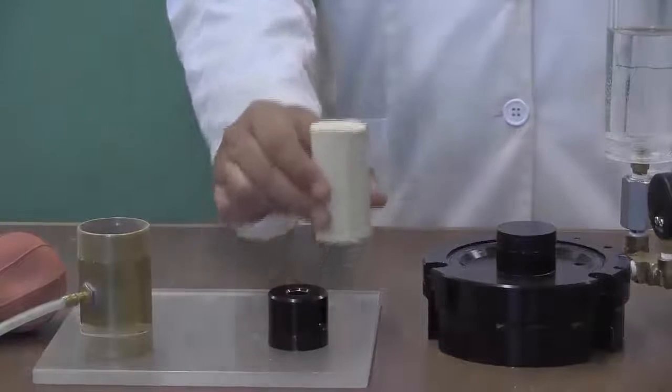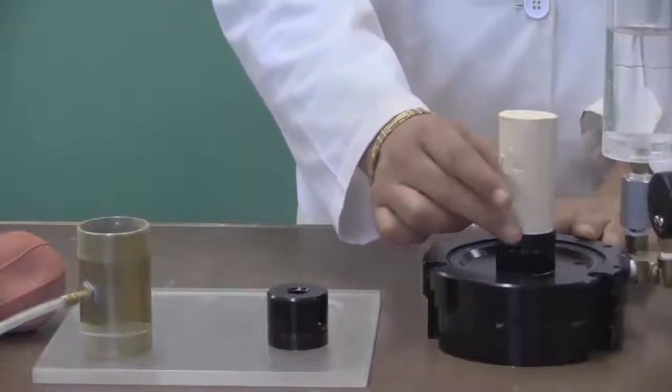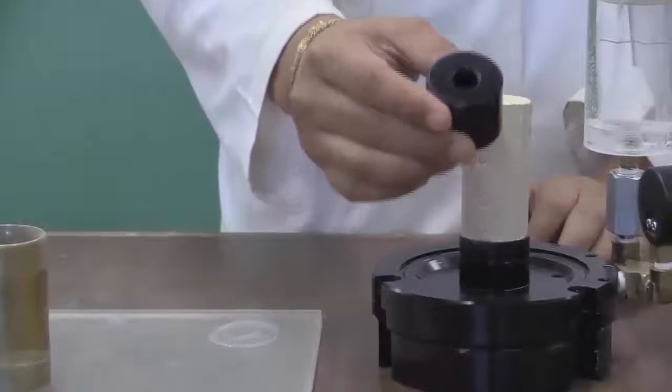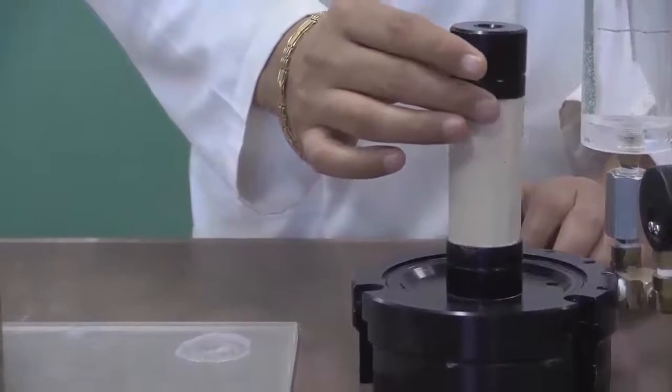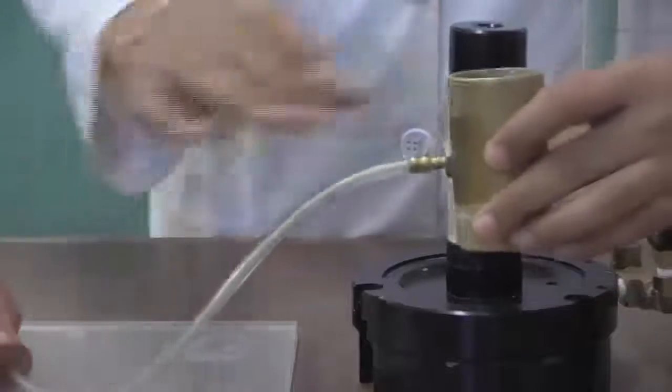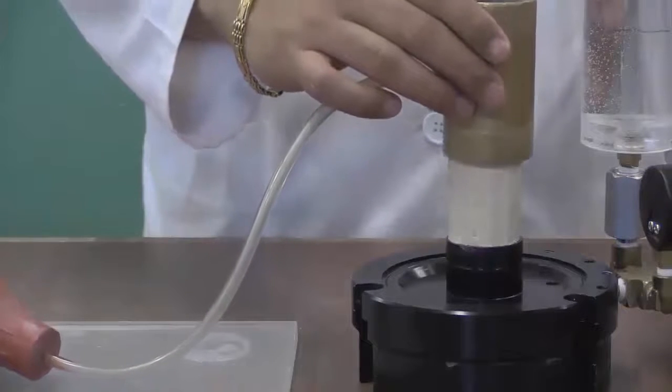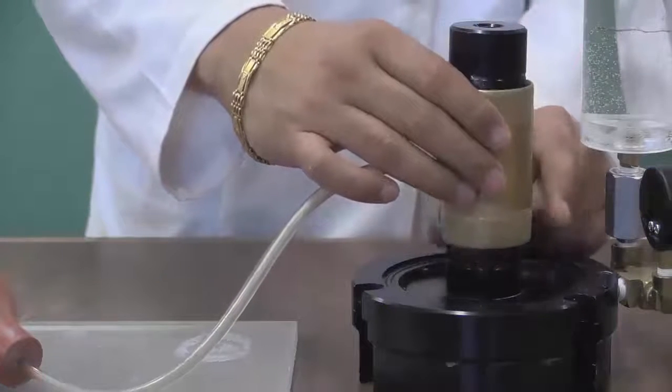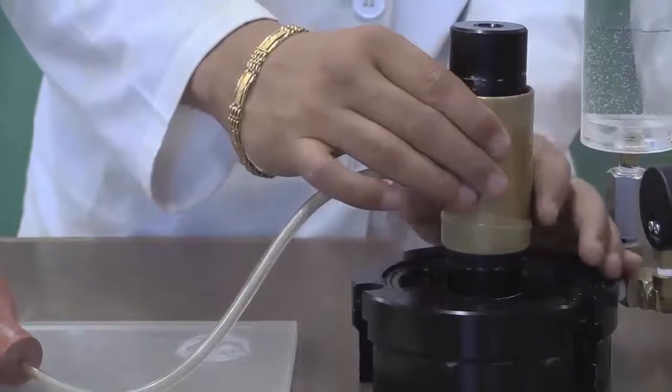Place the specimen on the base of the cell and center it. Then, gently place the top cap on top of the specimen. Carefully slide the membrane expander around the specimen. Gently place the membrane around the specimen and then unfold the bottom of the membrane onto the base.